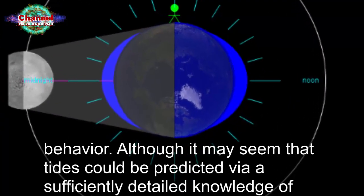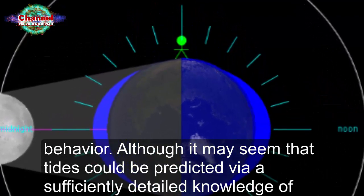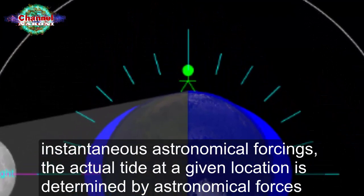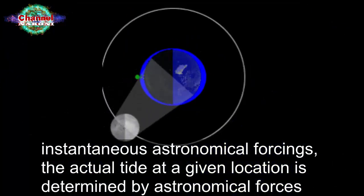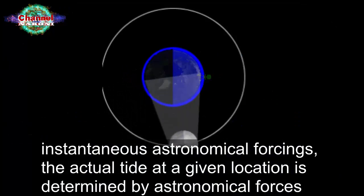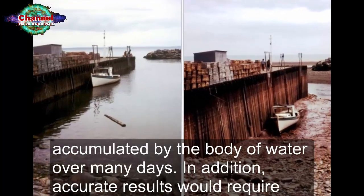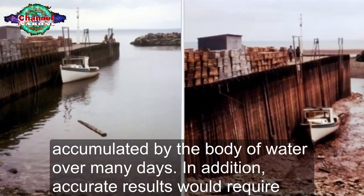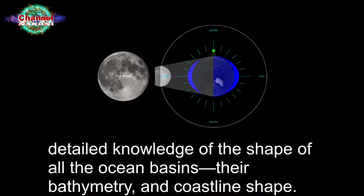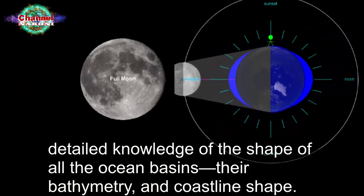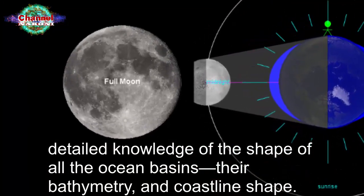Although it may seem that tides could be predicted via a sufficiently detailed knowledge of instantaneous astronomical forcings, the actual tide at a given location is determined by astronomical forces accumulated by the body of water over many days. In addition, accurate results would require detailed knowledge of the shape of all the ocean basins, their bathymetry, and coastline shape.